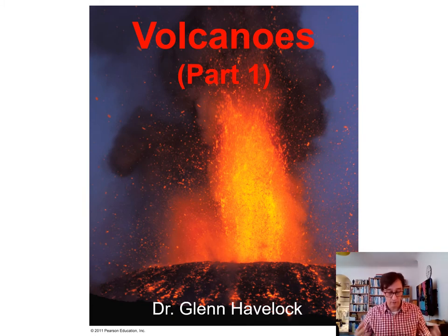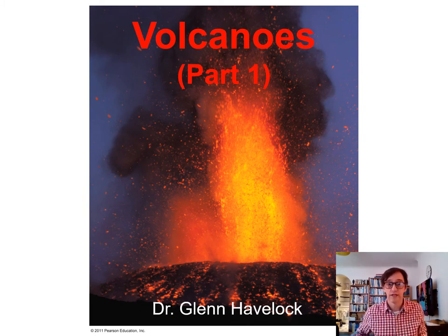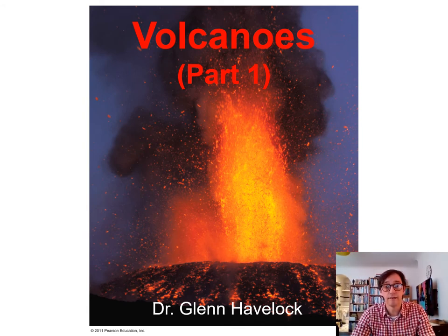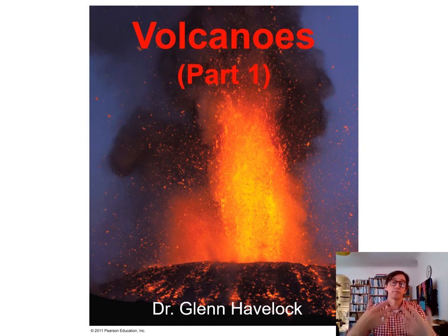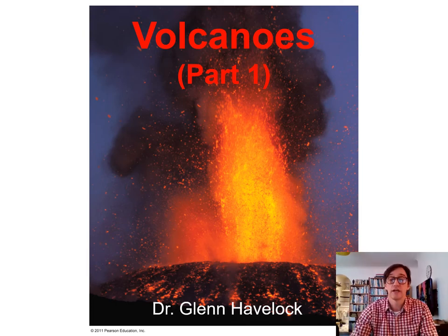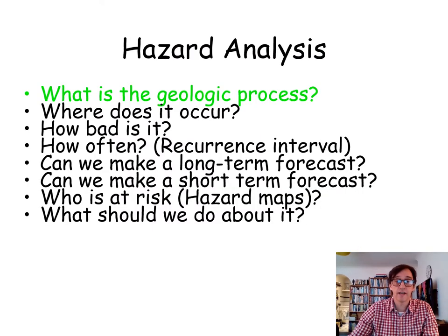We're going to learn an awful lot about volcanoes during this series of lectures. In the opening slide you can see an erupting volcano with molten rock — called lava — coming out. Molten rock when it's underground we call magma, and when it reaches the surface we change the name and call it lava. It essentially loses some of the gases, but it's the same material.